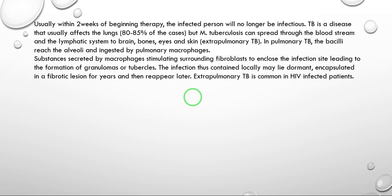Usually within two weeks of beginning therapy, the infected person will no longer be infectious. TB is a disease that usually affects the lungs in around 80 to 85 percent of cases. It can also spread through the bloodstream and the lymphatic system to bones, brain, eyes, and skin.